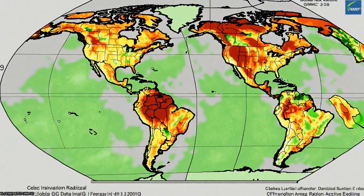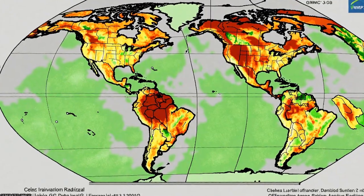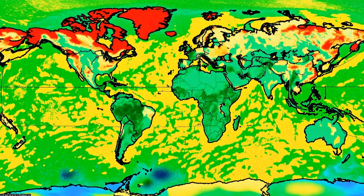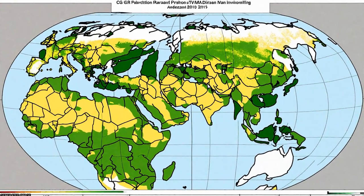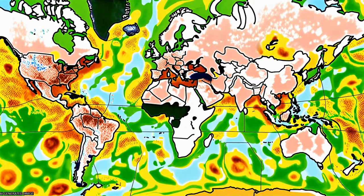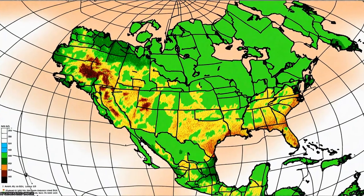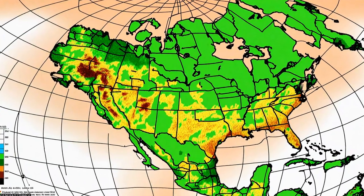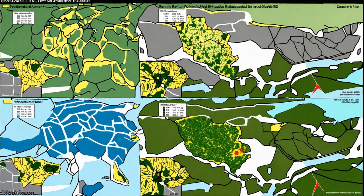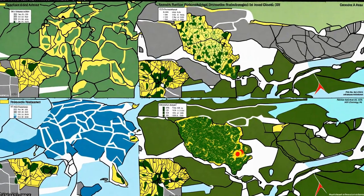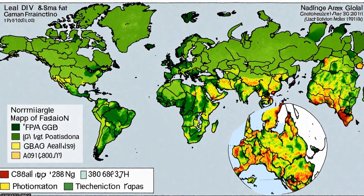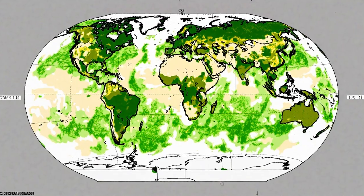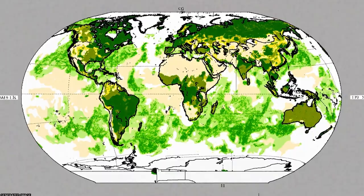The quality of these data sets was assessed through comparisons with field measurements, existing alternate satellite data-based products, plant growth limiting climatic variables in different regions, and correlations with large-scale circulation anomalies such as El Nino-Southern Oscillation and Arctic Oscillation.